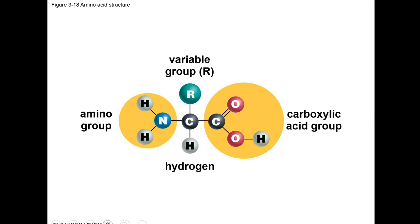There are 20 amino acids. All amino acids have the following structure: an amino group, a carboxyl group, a variable R group, and a hydrogen. The R group is what makes each amino acid different from one another. Some amino acids our body makes; other amino acids must be obtained from the proteins we eat. If you are vegetarian, you still need to eat protein in some form to get amino acids. You can get protein by eating eggs, nuts, or tofu, which is made from soybean, if you prefer not to eat meat.